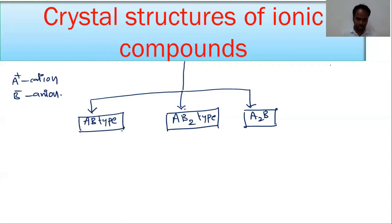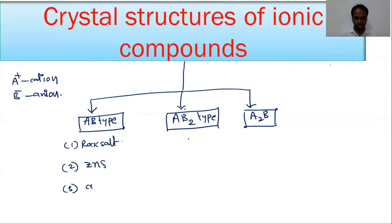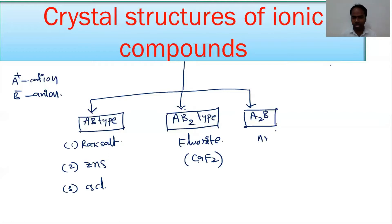In AB type, you get the rock salt structure, zinc blende structure, and cesium chloride structure. For AB2 type, the main example is the fluorite structure, for example CaF2. For A2B type, it is called the anti-fluorite structure, with the best example being Na2O.